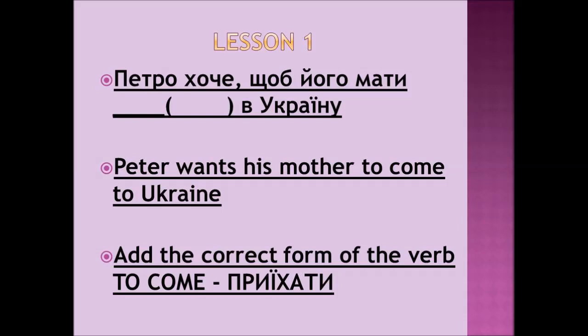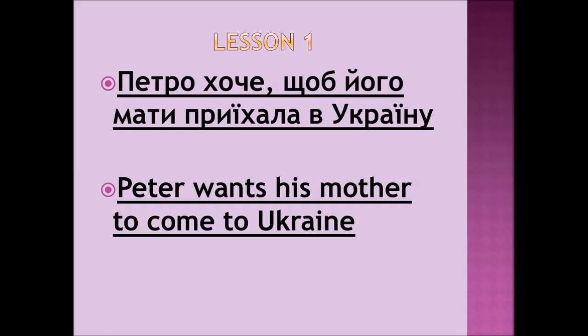Another example. Now, the verb 'to come.' To come by bus or any vehicle in Ukrainian is приїхати. Put this verb in the correct form. The sentence is: 'Peter wants his mother to come to Ukraine.' In Ukrainian: Петро хоче, щоб його мати [blank] в Україну. The right answer is: Петро хоче, щоб його мати приїхала в Україну. Peter wants his mother to come to Ukraine.